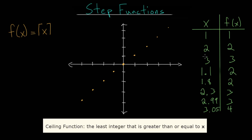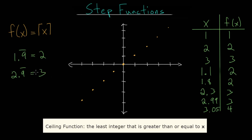Whatever number you have, the ceiling function rounds it up to the nearest integer, but if it is already an integer it remains that integer. You have to be careful with something like 1.9 repeating — that is technically equal to two, not less than two. Similarly, 2.9 repeating equals three. So those repeating-decimal edge cases equal the integer above, and the equal part of the definition applies there.